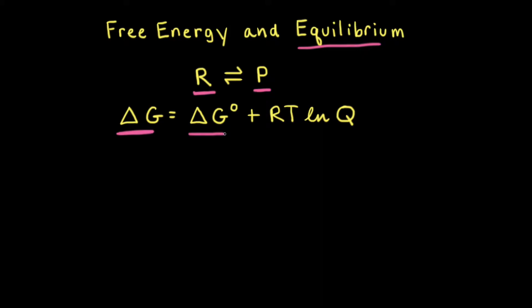Delta G naught is the standard change in free energy between reactants and products. This value refers to the difference in free energy between reactants and products in their standard states at a specified temperature. R is the ideal gas constant, T is the absolute temperature in Kelvin, and Q is the reaction quotient. At equilibrium, the instantaneous difference in free energy between reactants and products is zero, which means there's no more driving force for the reaction. And at equilibrium, the reaction quotient Q is equal to the equilibrium constant K.